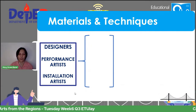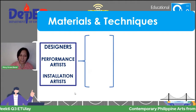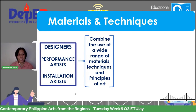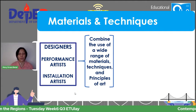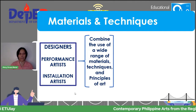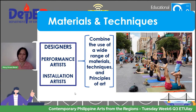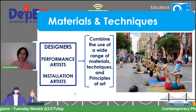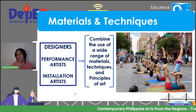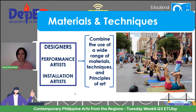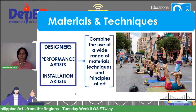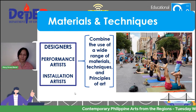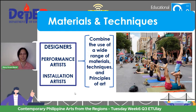For designers, performance artists, and installation artists, what is unique about them is that they actually combine a wide range of materials, techniques, and principles or elements of art to produce their art form. For example, flash mob — this particular flash mob is not the usual hip-hop or jazz moves but focuses on an acrobatic kind of performance in a flash mob style, done in public spaces. This is performance art.